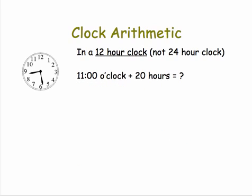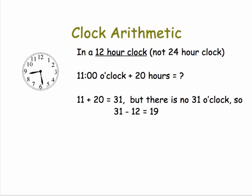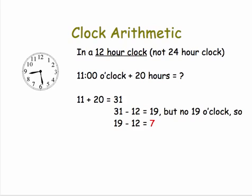What about 11 o'clock plus 20 hours? Well, 11 plus 20 is 31, but if we take away 12 from that, we get 19. And there's no 19 on the clock, so we can take away 12 again, and now we get 7. So 11 plus 20 hours gives us 7 o'clock.